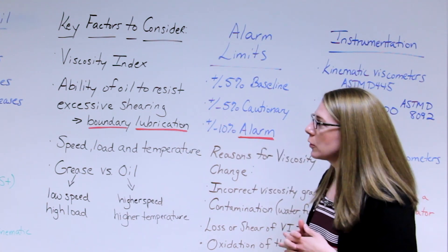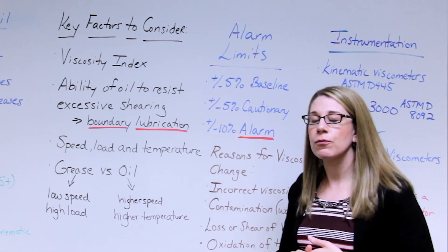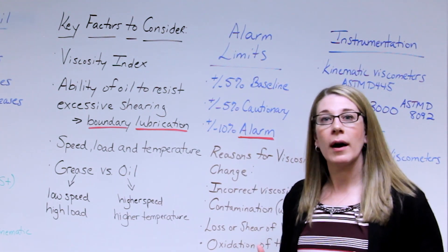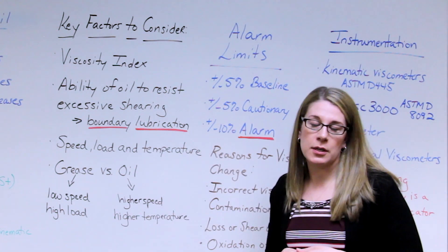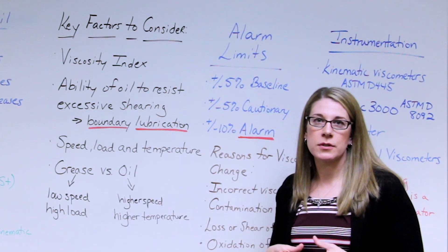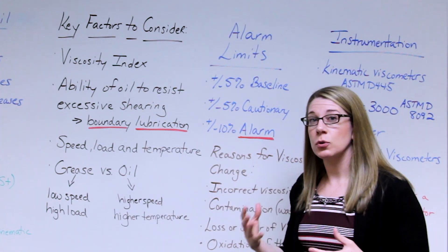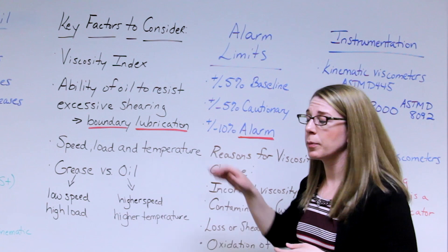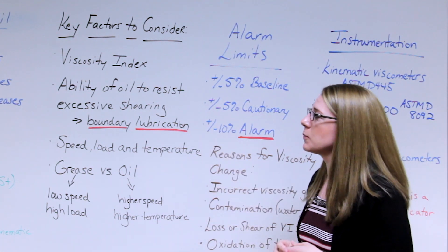The second thing is the ability of the oil to resist excessive shearing. Excessive shearing if that's occurring from shock loading or a lot of load in a certain situation, boundary lubrication conditions can occur which is two surfaces that are excessively touching. If this is occurring too frequently and for too long, this can create lubricant starvation and ultimately lead to a failure.